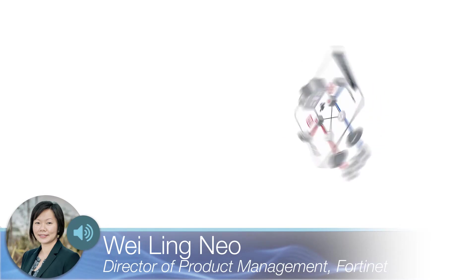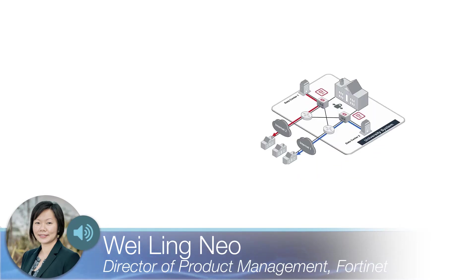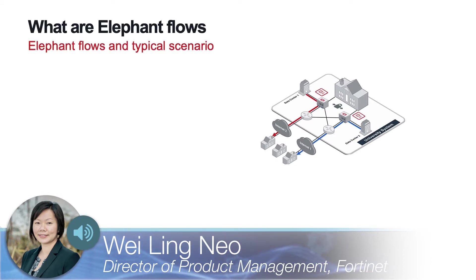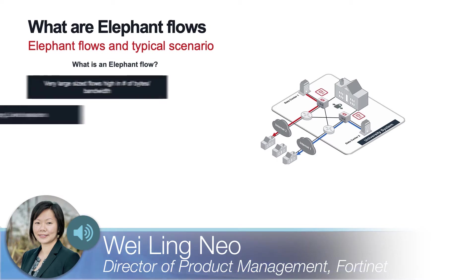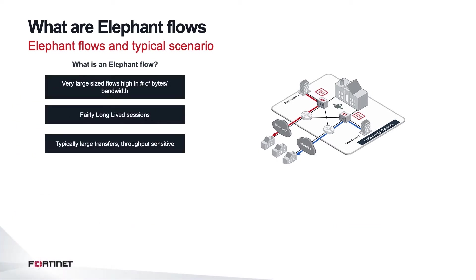Today we want to talk about a really exciting new feature of the MP7, which is the acceleration of elephant flows. Elephant flows are essentially very large-sized flows in terms of number of bytes and bandwidth. They are also typically fairly long-lived sessions, typically large transfers and very throughput-sensitive. The other key things we typically see with elephant flows are these scenarios in the data center.